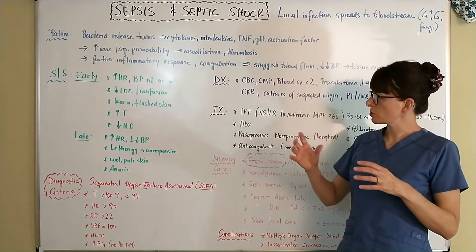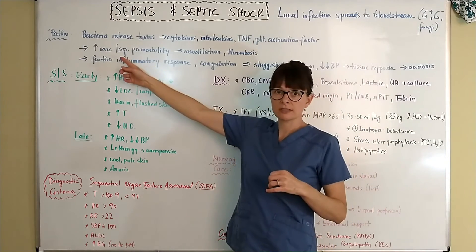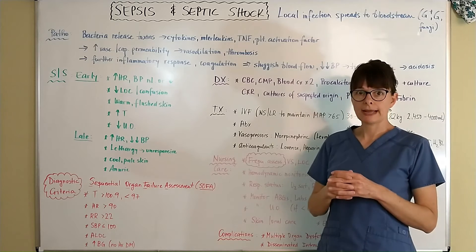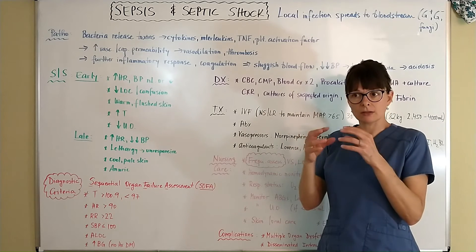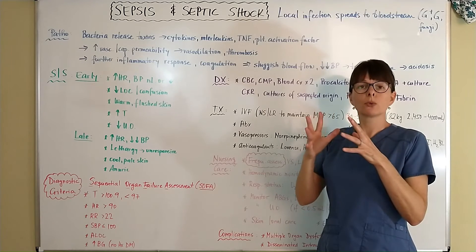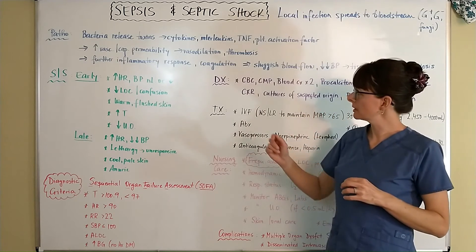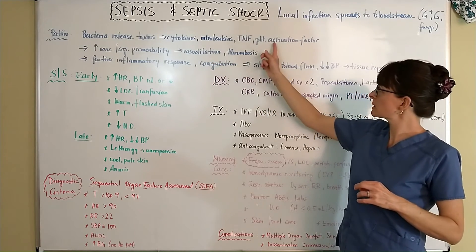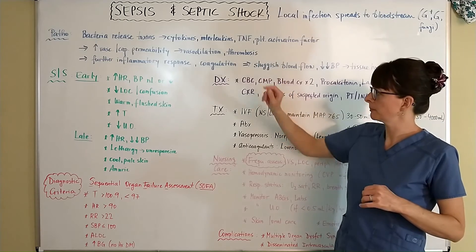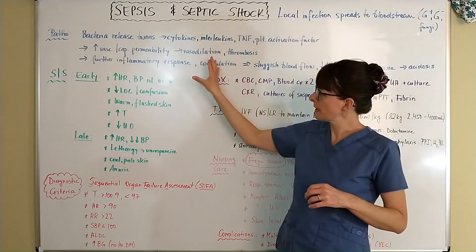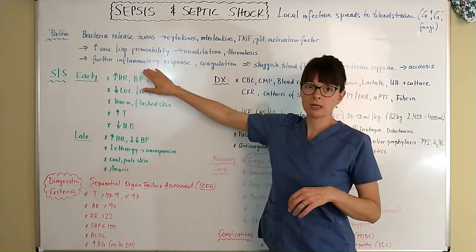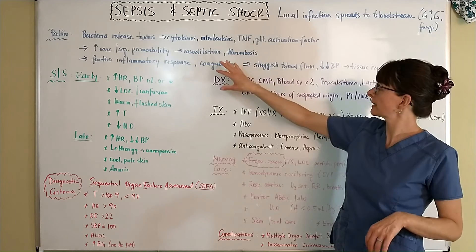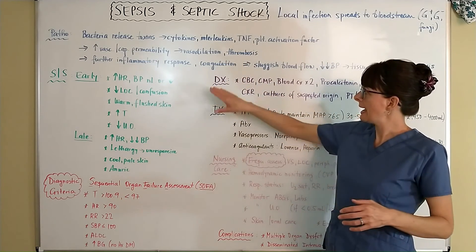All this immune response causes an increase in vascular as well as capillary permeability, meaning the blood vessels get dilated and fluid leaks out, causing massive vasodilation as well as thrombosis because the platelets have been activated. These mechanisms cause further inflammatory response — more cytokines, interleukins, TNF, and platelet activation factor responding to the sites.